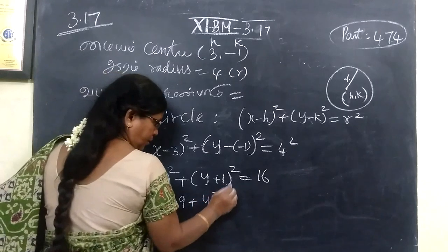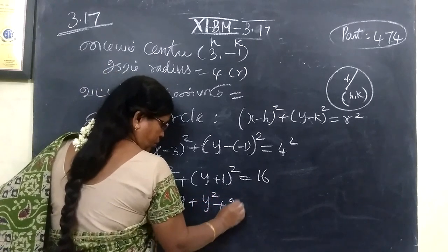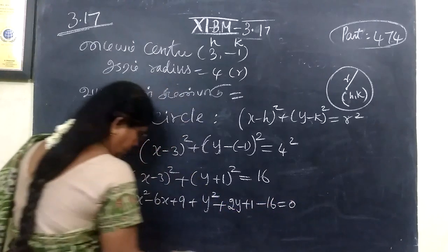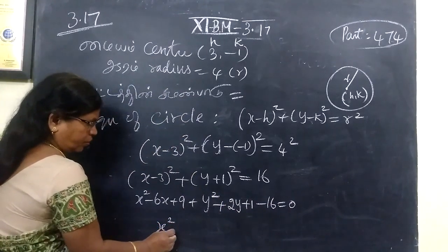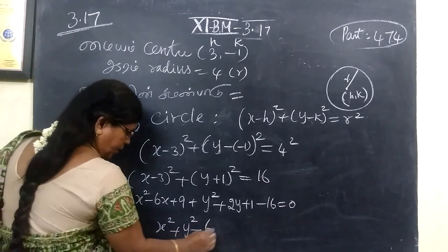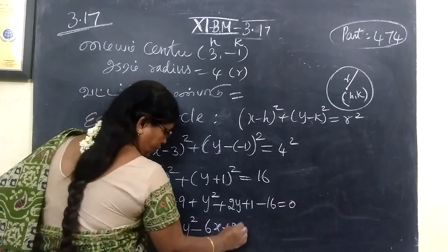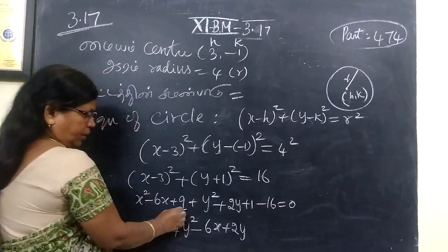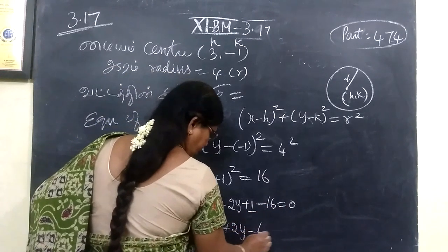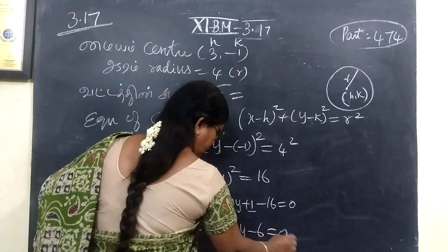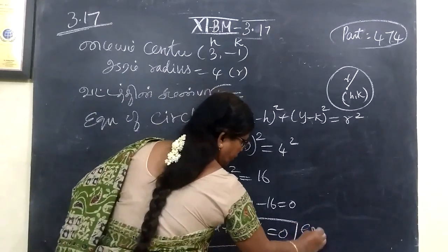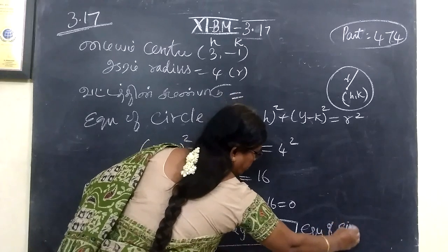Then: x squared minus 6x plus 9 plus y squared plus 2y plus 1 minus 16 equal to 0. So, x squared plus y squared minus 6x plus 2y equal to 9 plus 1, which is 10 minus 16, giving minus 6 equal to 0. This represents the equation of the circle.